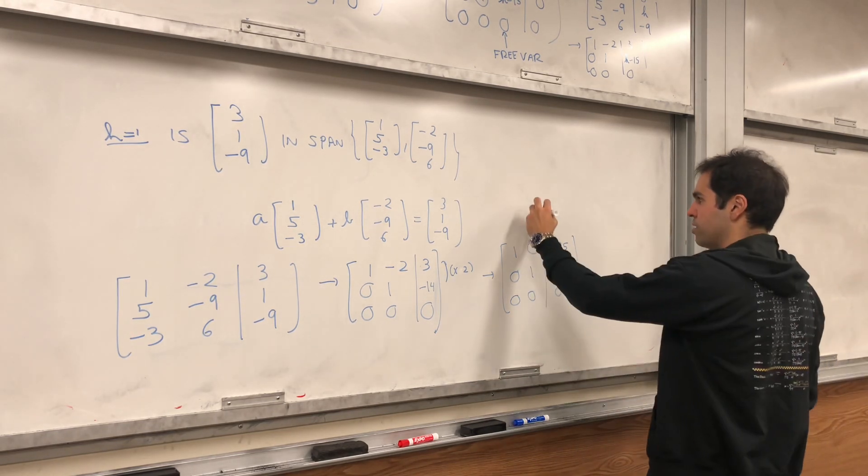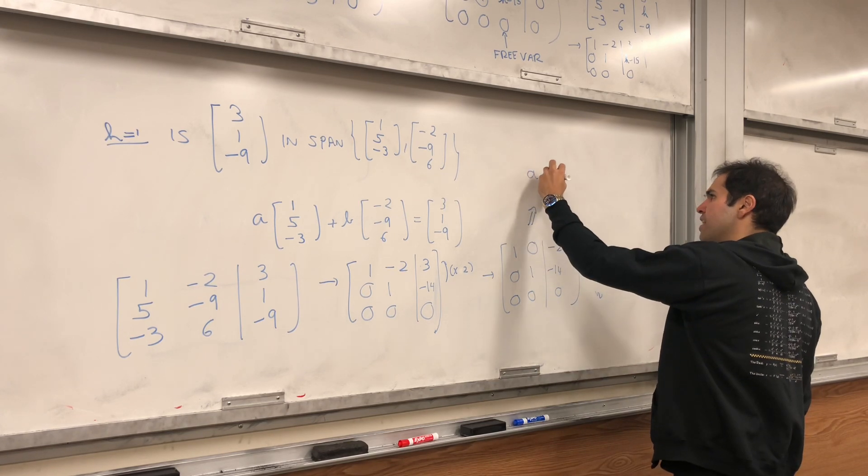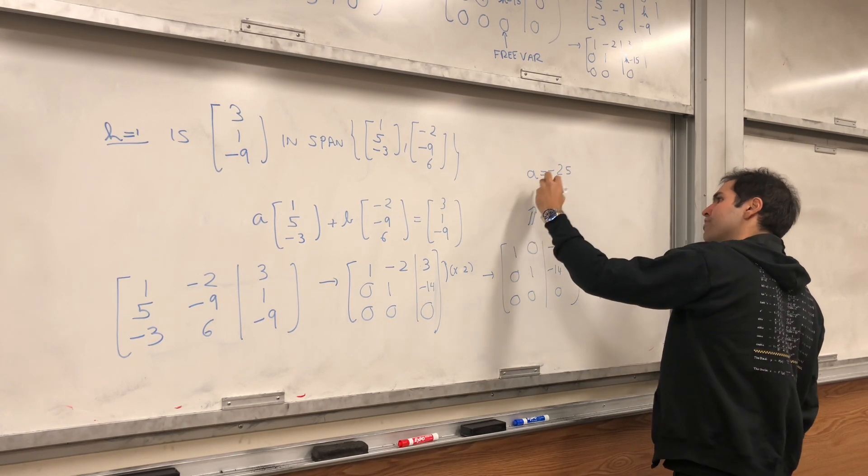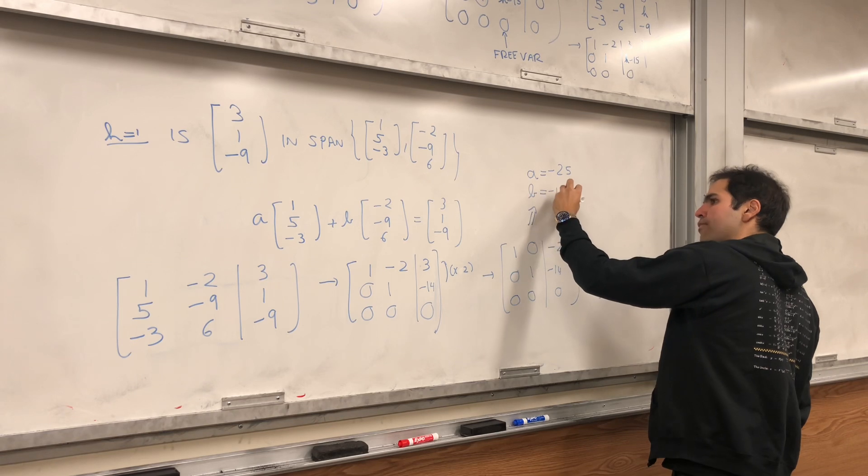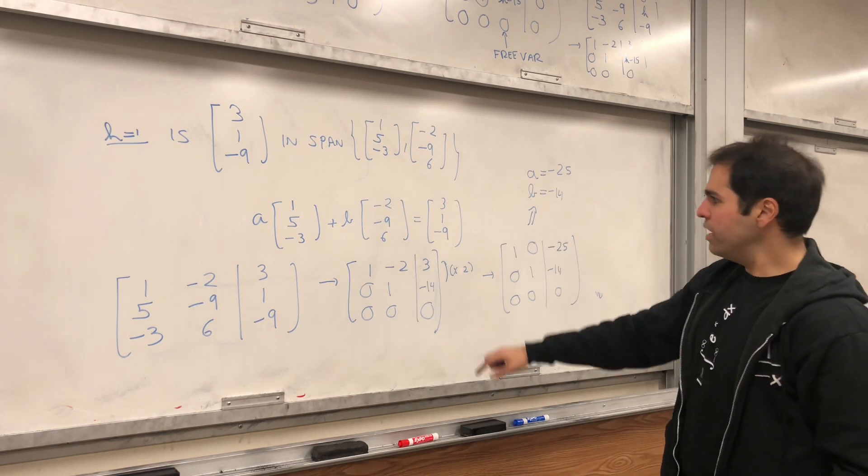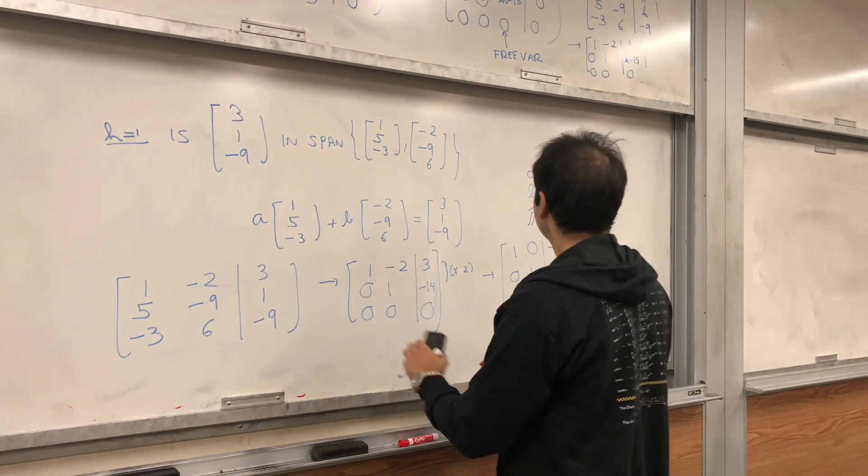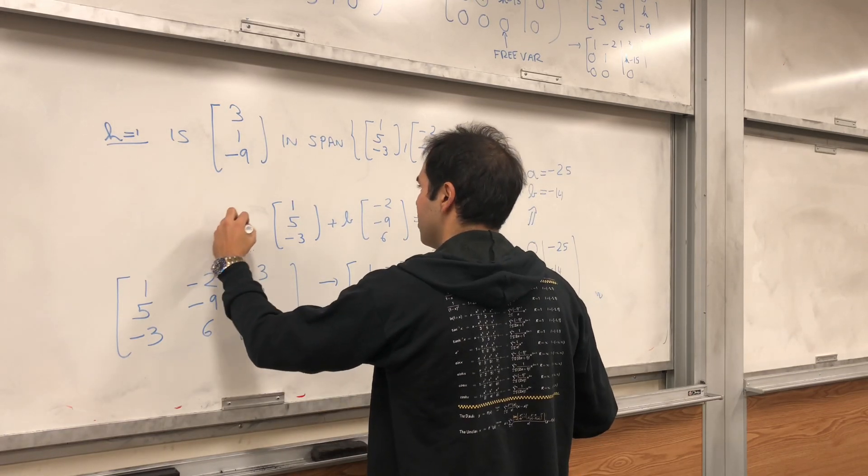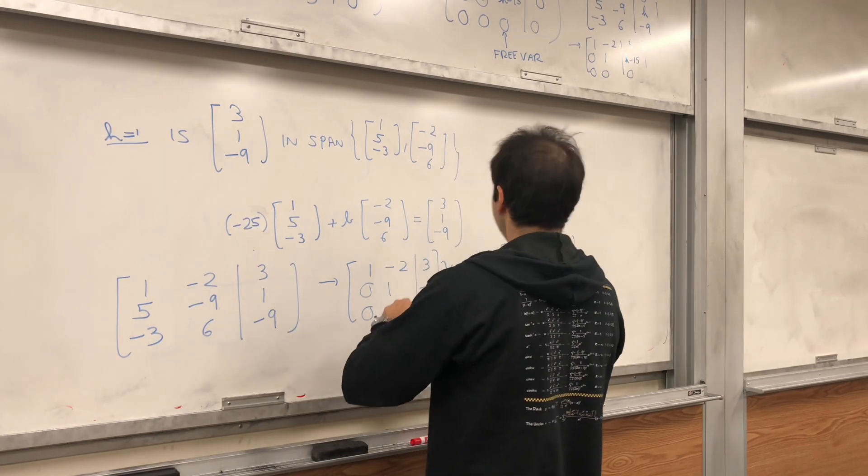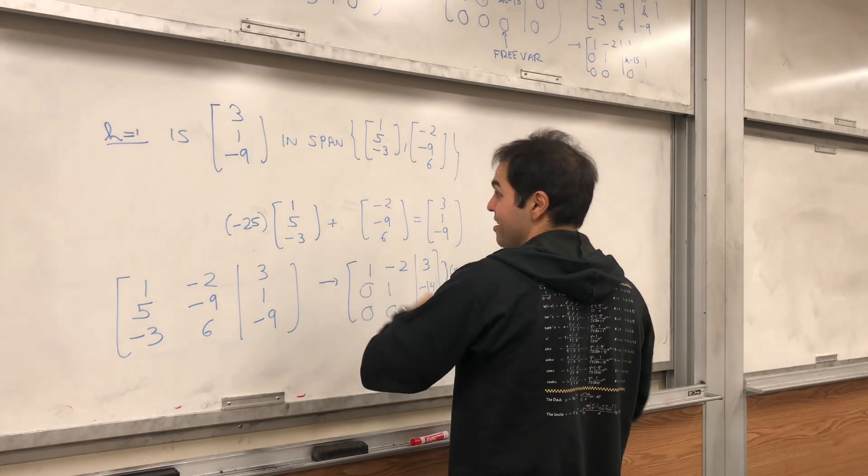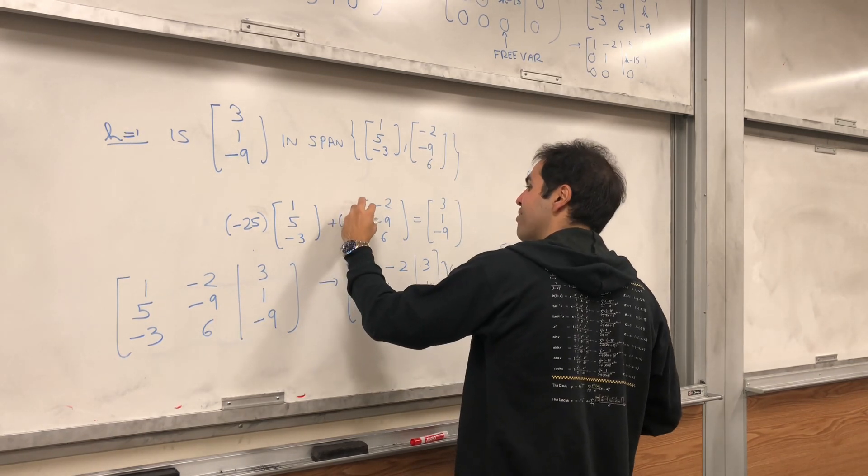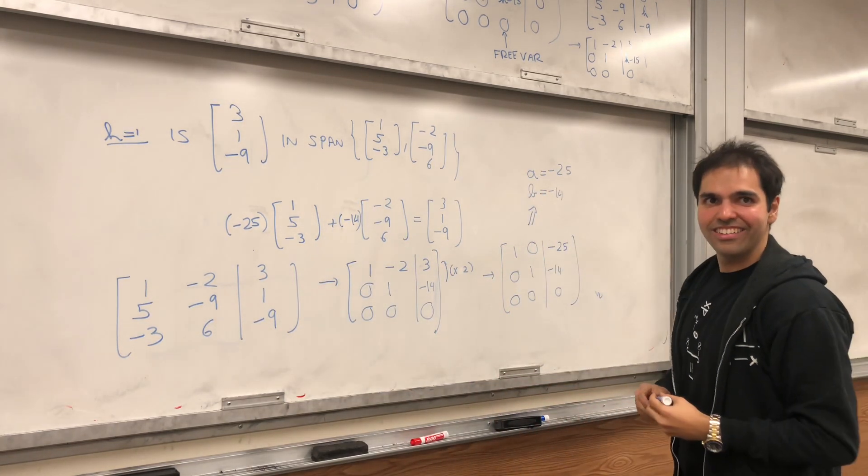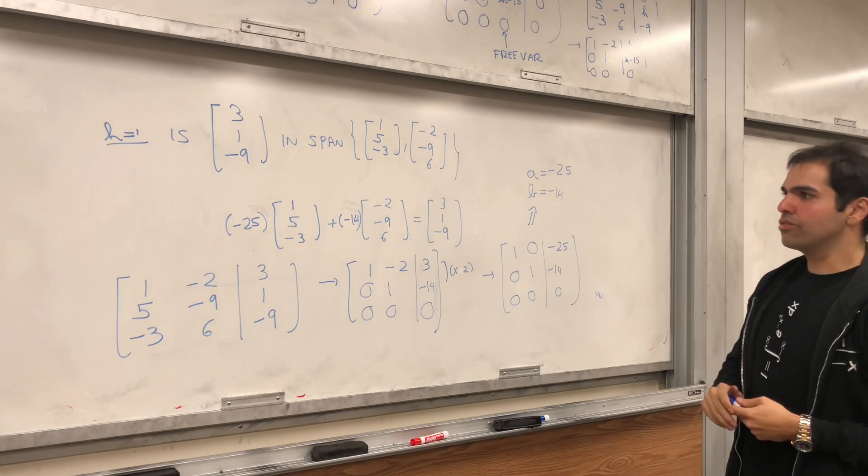So it turns out, back substituting, A is minus 25 and B is minus 14. So 3, 1, minus 9 is minus 25 times this vector plus minus 14. I think it's very impressive. Who would have guessed that? And you can check that this is correct.